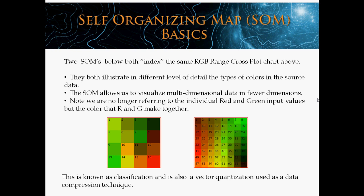This technique allows us to visualize multidimensional data in fewer dimensions. We're not talking about red and green separately as two inputs into the neural network — we're talking about one single color, the color orange. That allows us to talk about two dimensions as if it were just one. Instead of talking about red and green, we're talking about orange. So this technique is known as classification and is often used in data compression.